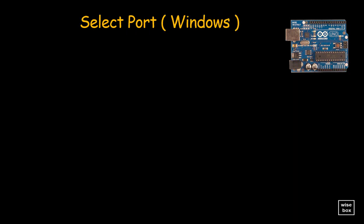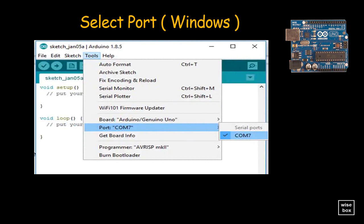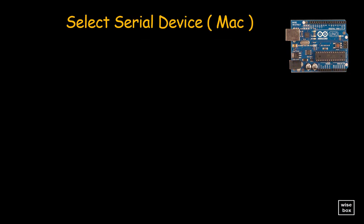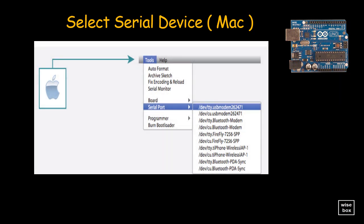Next, you must tell the IDE which COM port the Arduino is on. Navigate to the Tools menu and select Port — in this case, select COM7. If your Arduino is on a different port, select that port instead. For Macs, select the serial device of the Arduino board from the Tools menu, then the Serial Port menu. On the Mac, this should be something with /dev/tty.usbmodem.